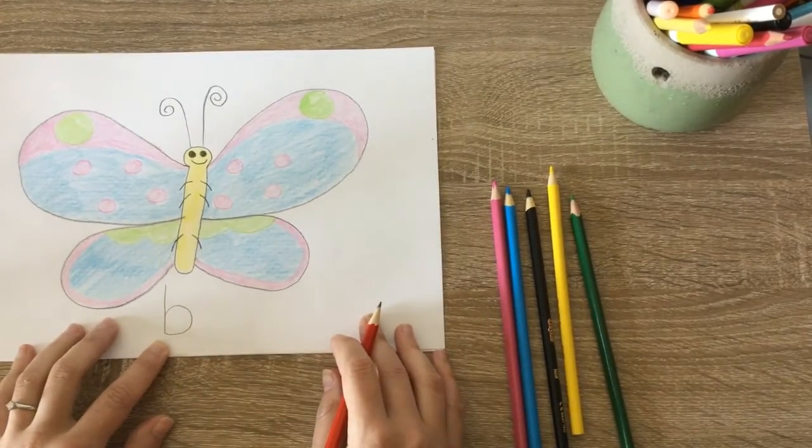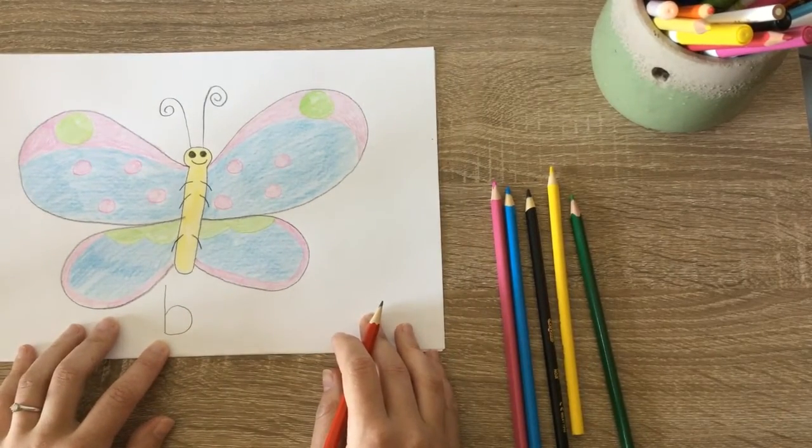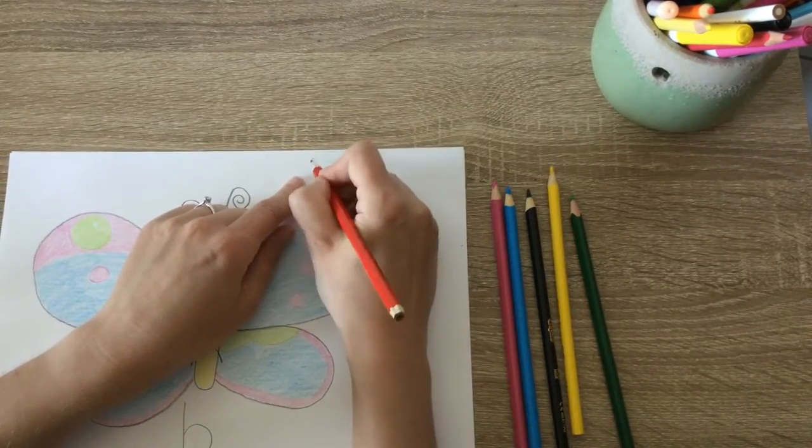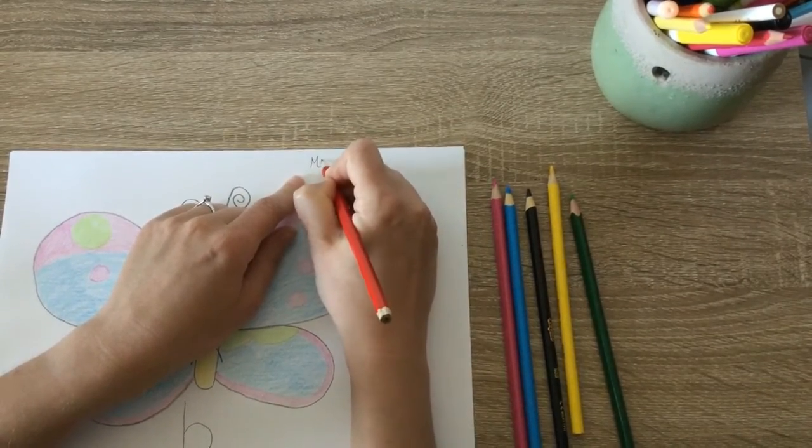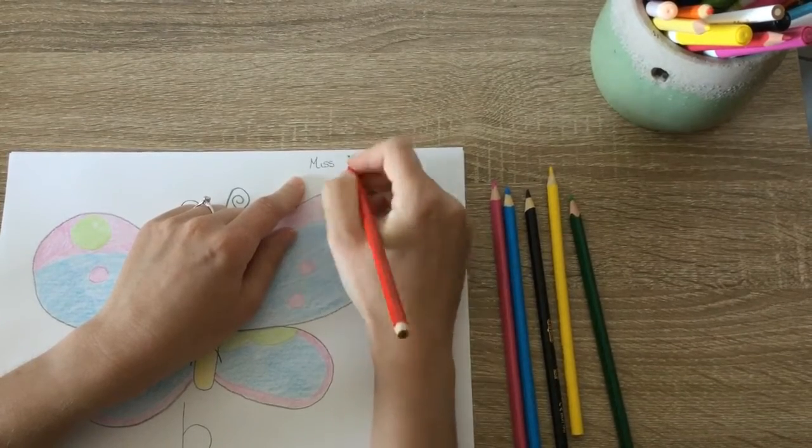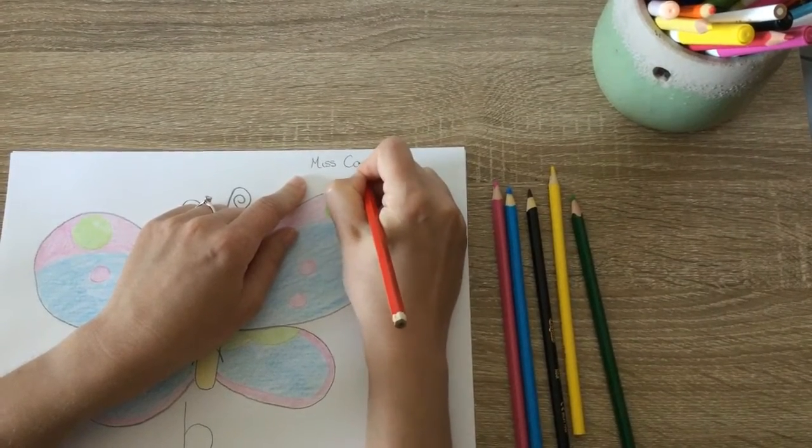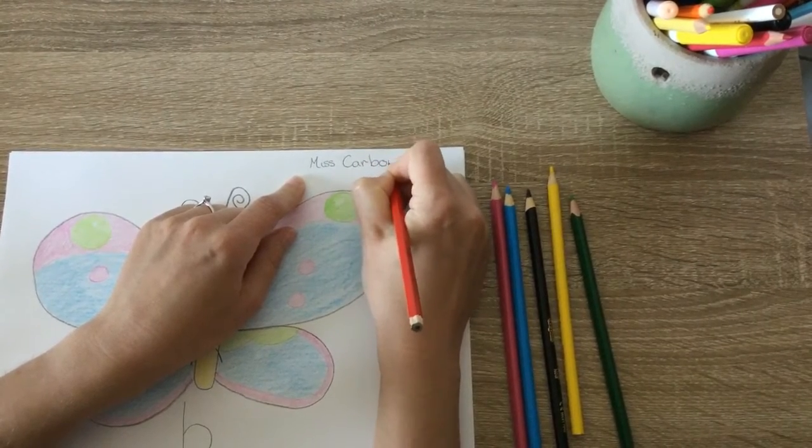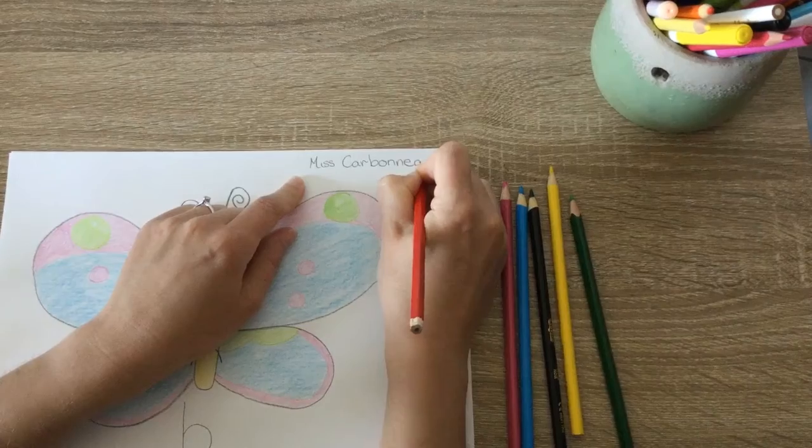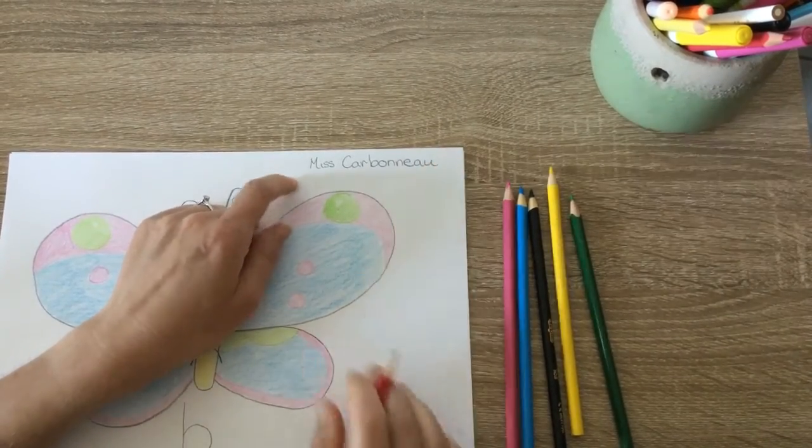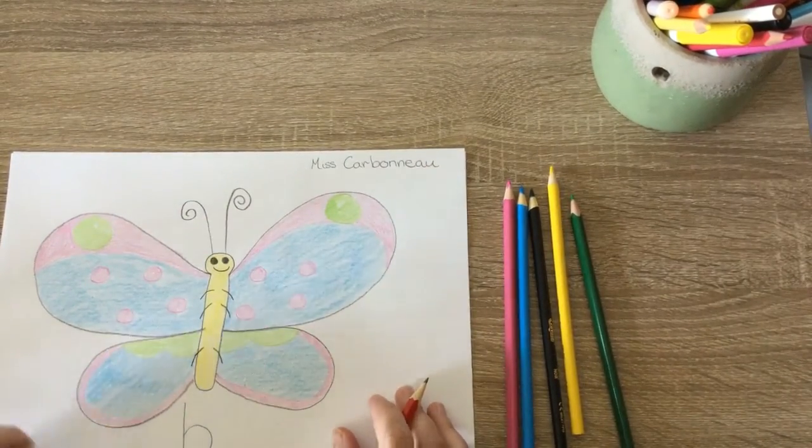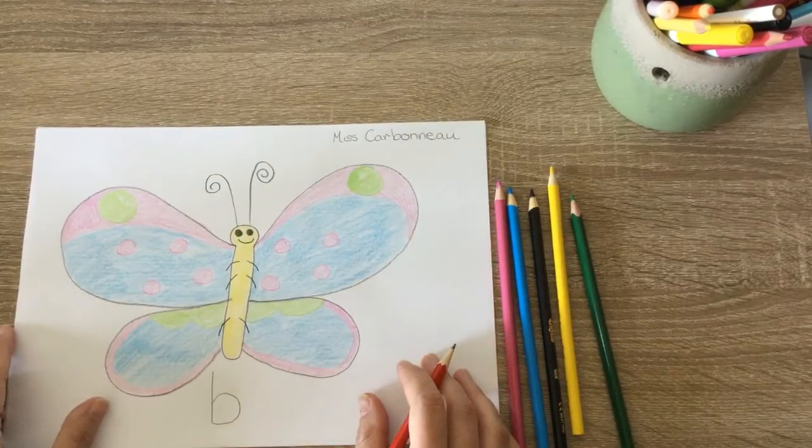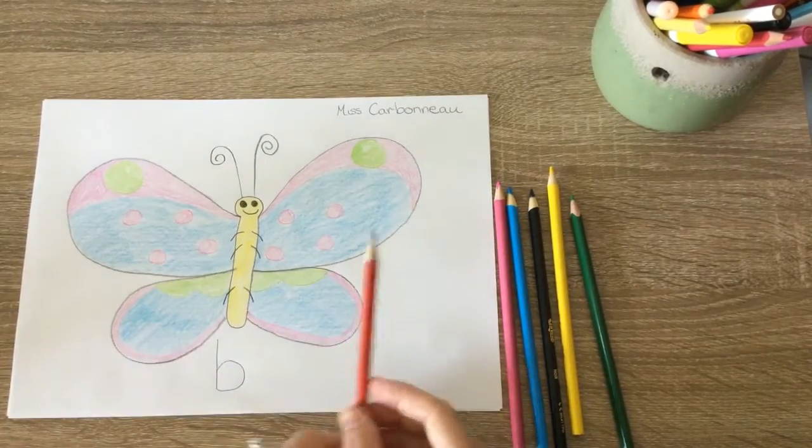Now the most important bit is to write my name on my work, and I'm going to write it up here. So make sure that you write your name on your work, writing as many letters as you can from your name. There. Now, if I was to leave my work somewhere, they would know it's Miss Carbono's work. And we're finished.